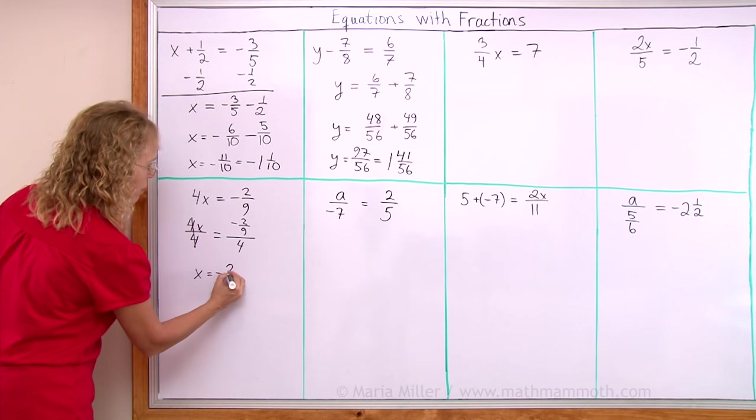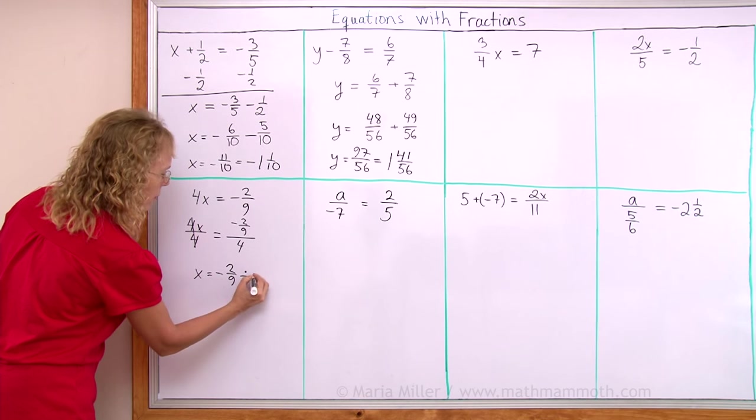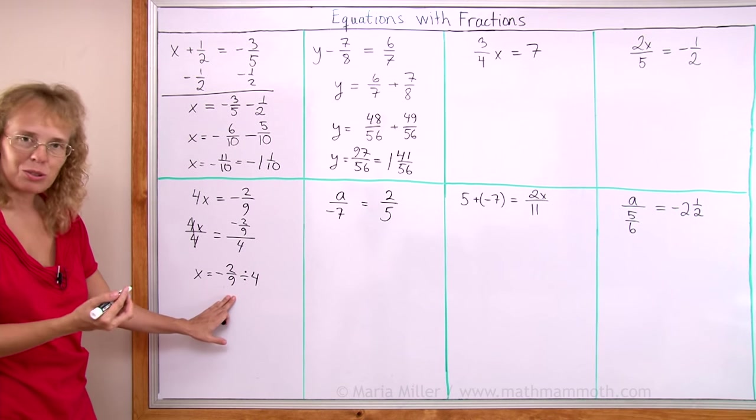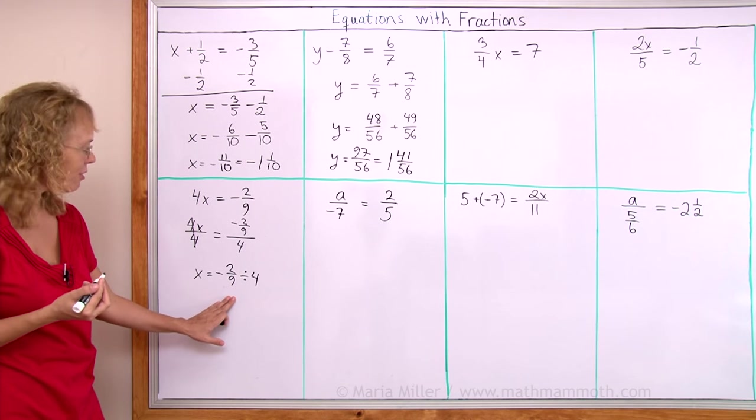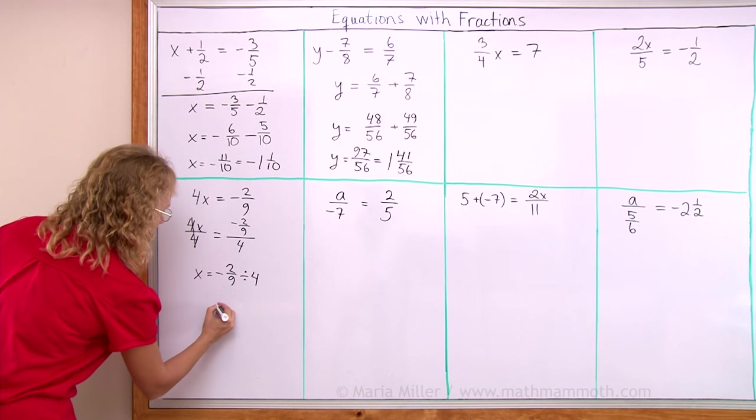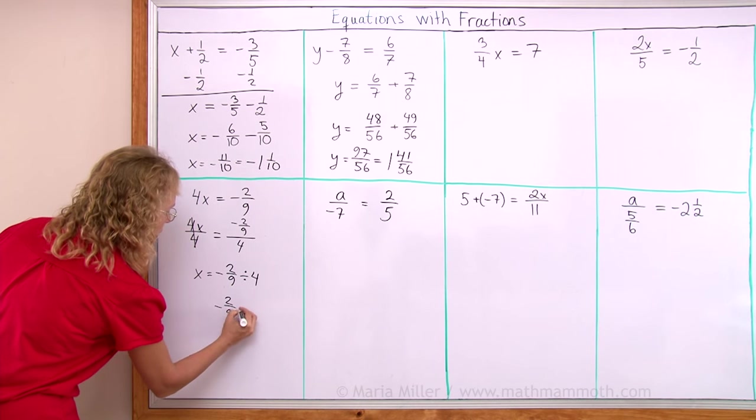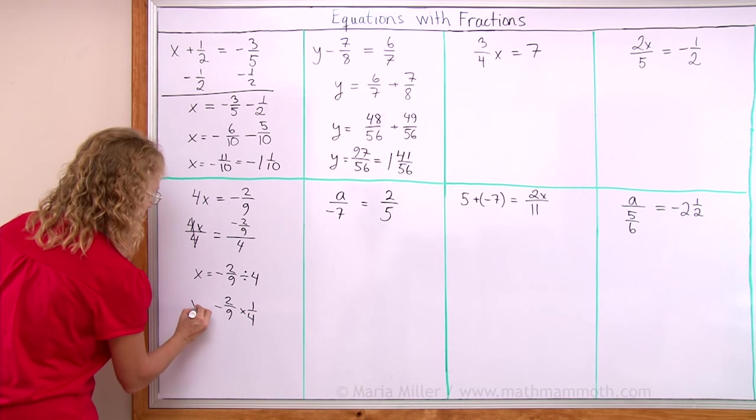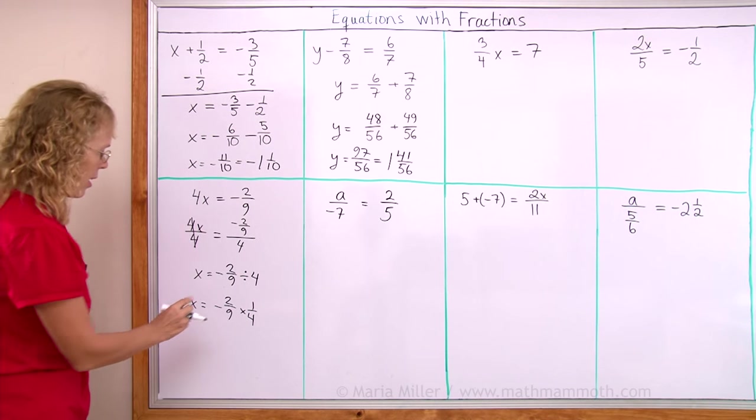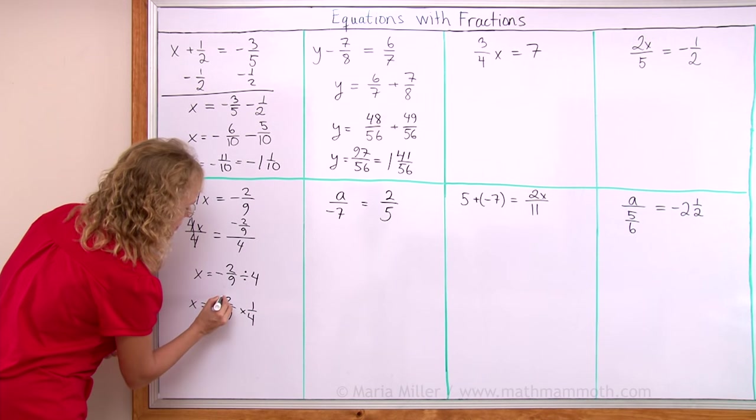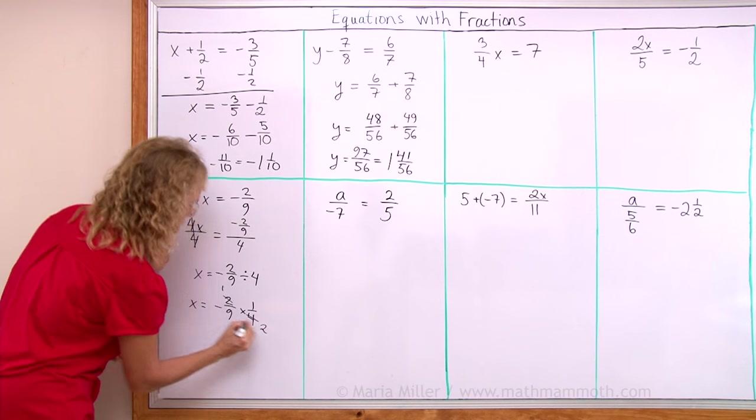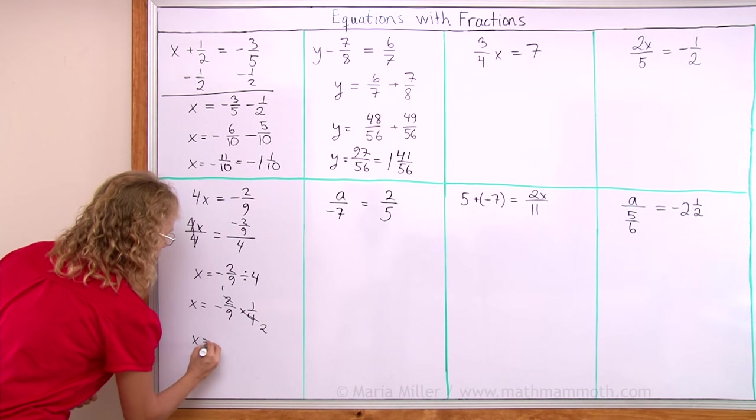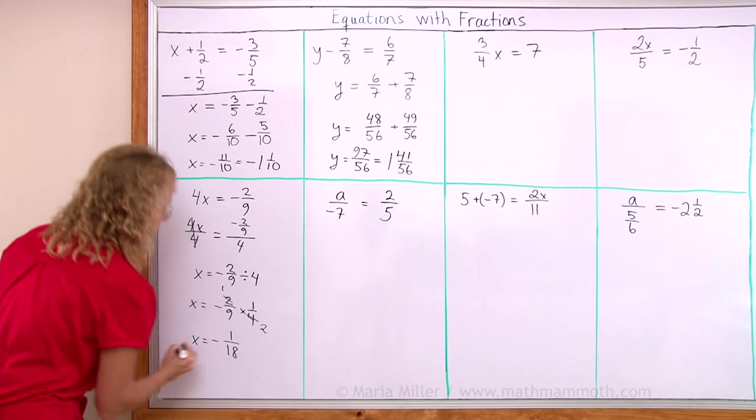Here I will write it using the other division symbol. Now we need to use the normal way of dividing fractions which is that you change it into a multiplication. You have negative 2 ninths times the reciprocal of 4 which is 1 fourth. Two and 4 I can simplify, leaving 1 here and 2 here. So then it is 1 over 18 but it is negative. Negative 1 over 18 is the final answer.